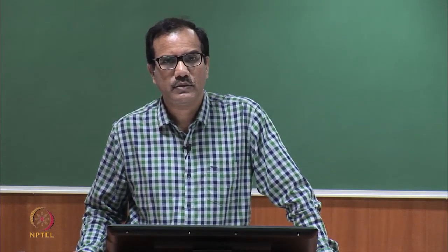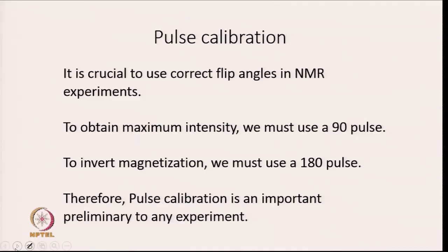It is crucial to use correct flip angles in NMR experiments. NMR is a low sensitive technique, so we want to get maximum signal from each scan. To obtain maximum intensity, we must use a 90-degree pulse, and to invert magnetization we must use a 180-degree pulse. The correct length of the pulse should be maintained, and therefore pulse calibration is an important preliminary to any experiment.